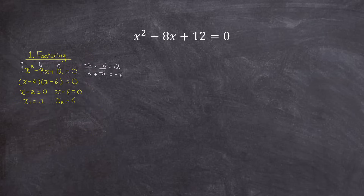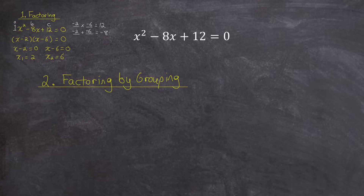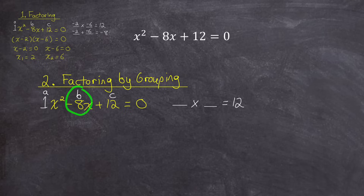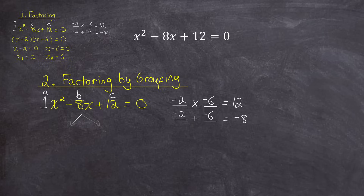Let's explore a second factoring method — solving by factoring by grouping. The process starts out the same: identify that the quadratic has an a value of 1, b value of negative 8, and c value of 12. This method isn't normally used when the a value is 1, but we could still use it. I would look for numbers that have a product of a times c, so 1 times 12, and a sum of the b value negative 8. Those numbers are again negative 2 and negative 6. But this time, instead of going right to the factors, we're going to split the middle term into negative 2x minus 6x.